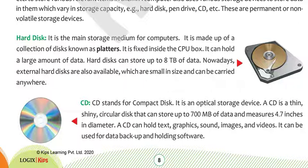Hard disk — it is the main storage medium of a computer. It is made up of a collection of disks known as platters. The hard disk is a storage device which is inbuilt in your computer. It has different disks and those disks together allow data to be stored.